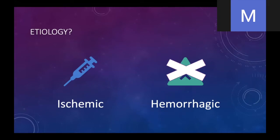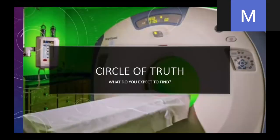One important thing is that you cannot distinguish ischemic from hemorrhagic stroke based on physical exam and history alone. Sometimes patients present with headaches, sometimes sudden, sometimes staggered — these things do not really determine if it is ischemic or hemorrhagic. You have to do imaging. The imaging modality of choice is our CAT scan — we call it the circle of truth. You want to do a simple non-contrast CT of the head.